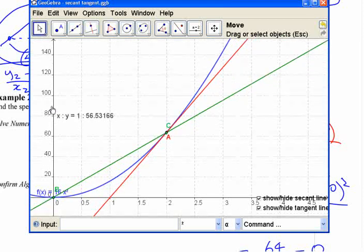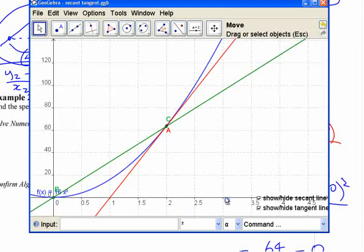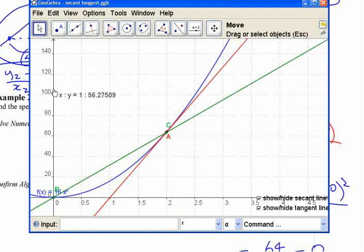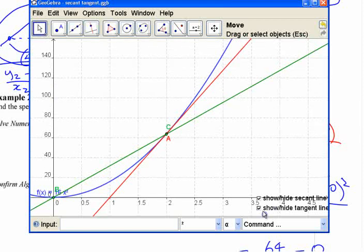We calculated the slope of the secant line through those two things there. Let's move that up a bit so we can see what we're doing. Let's get rid of this tangent line for a second. We calculated that slope through there. That slope is 32.